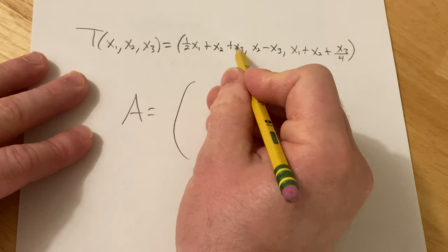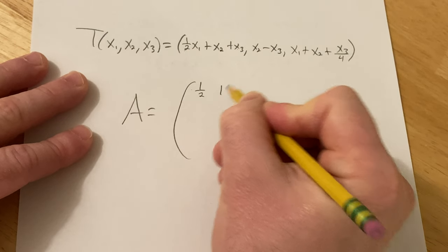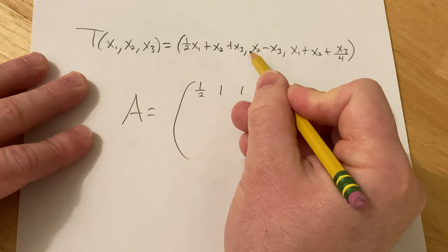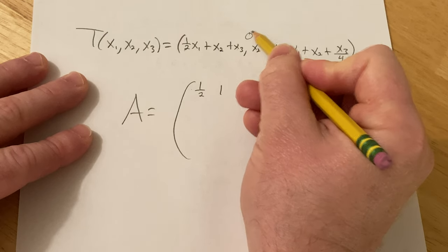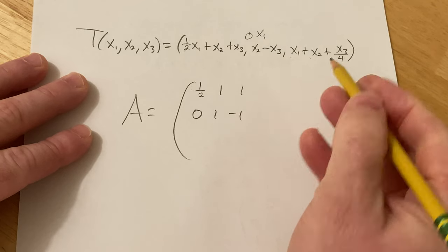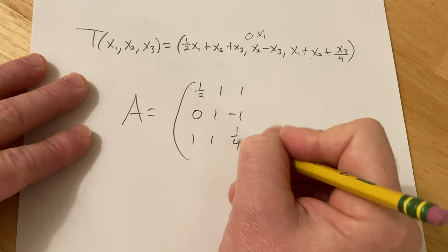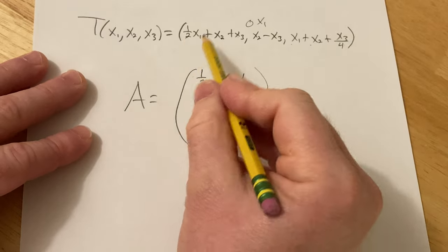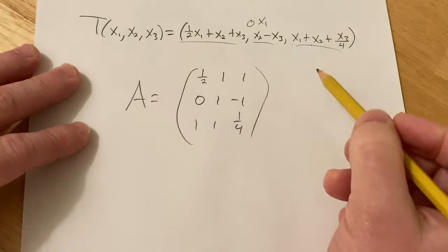So in this case, we can just write the matrix right away. We have 1/2, 1, 1. That's the first row of our matrix. Zero, right? There's no x1 here. So it's really a 0x1. So 0, 1, minus 1. And then 1, 1, 1/4. That would be your matrix. Again, you just get it first row, second row, third row, super easy.